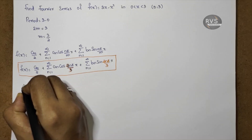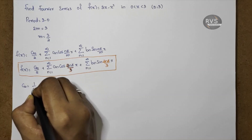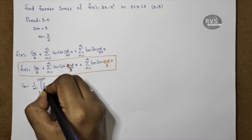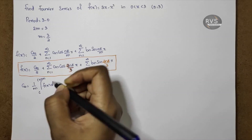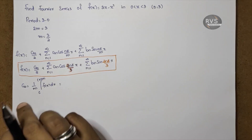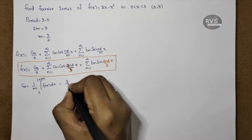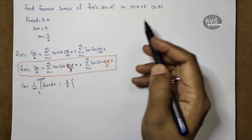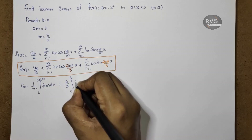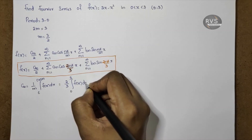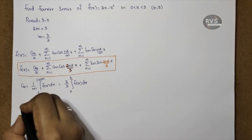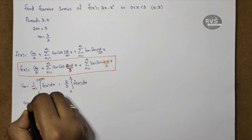To find a0, the formula is: a0 is equal to 1 by m into integral from c to c plus 2m of F of x dx. With m equal to 3 by 2, the reciprocal is 2 by 3, and the integral is from 0 to 3 of F of x dx, where F of x is 2x minus x squared.